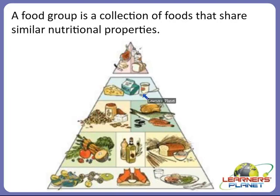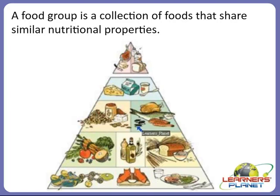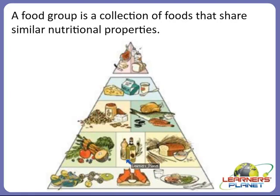The third section of the pyramid shows nuts, meat, poultry, and fish — these are non-vegetarian foods. You should consume these in about two servings per day. The next section shows vegetables and fruits — green leafy vegetables are very important. You should consume green leafy vegetables and fruits daily, as well as things made from cereals. You should consume these more than nuts, non-vegetarian food, milk, yogurt, fats, oils, and sweets.